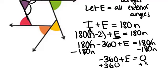So if we add 360 to both sides, we'll see that E, which was all the exterior angles put together, the sum of their degrees, is 360.